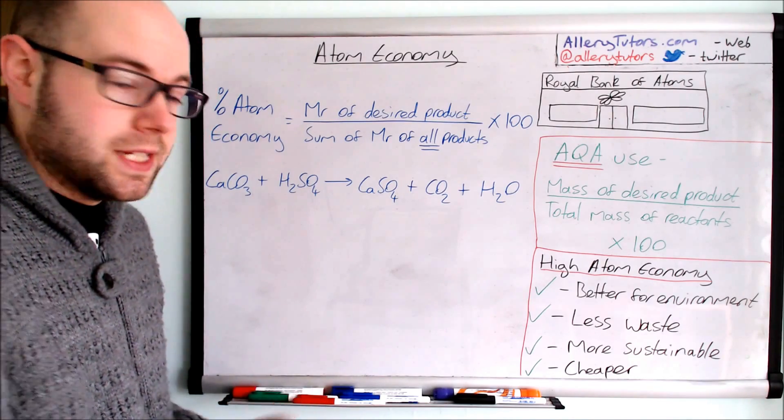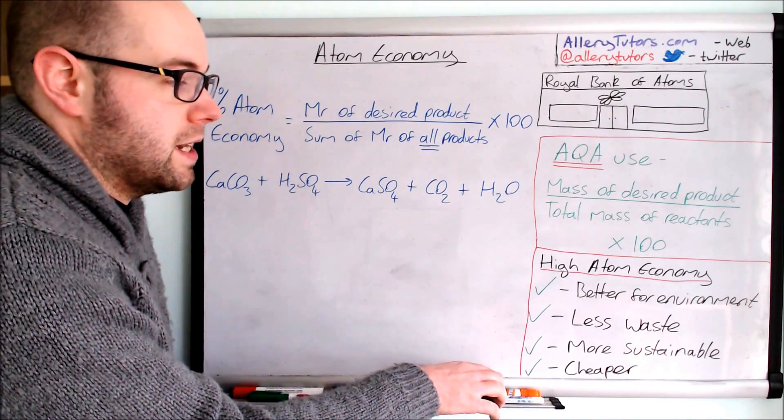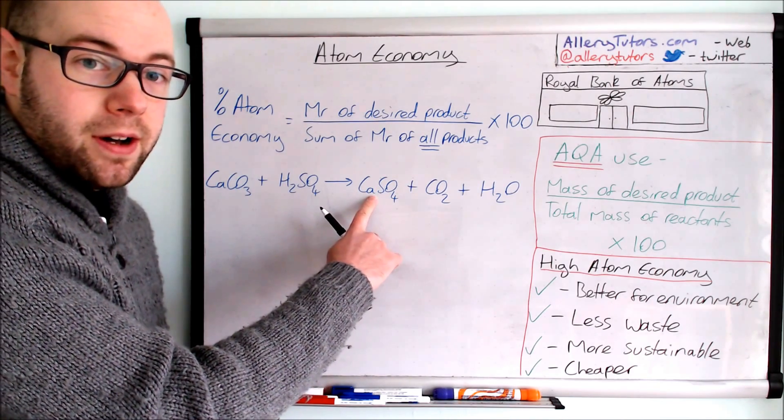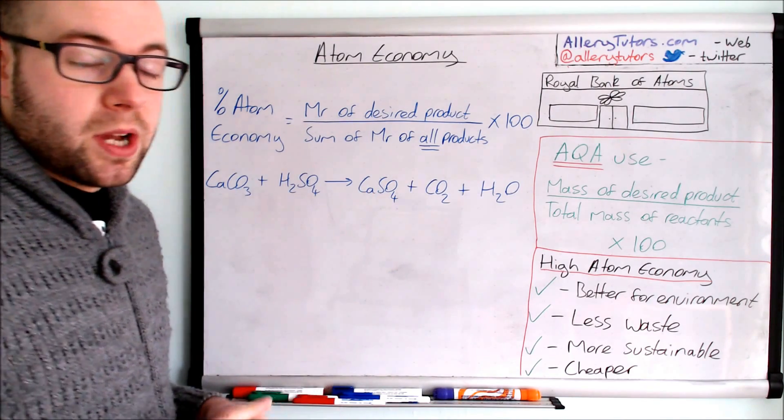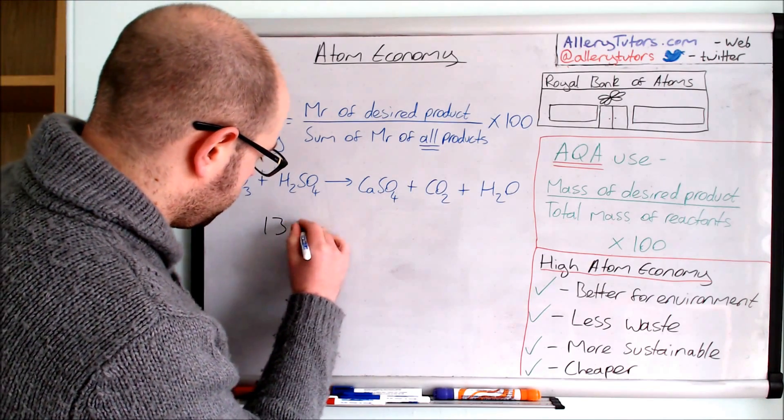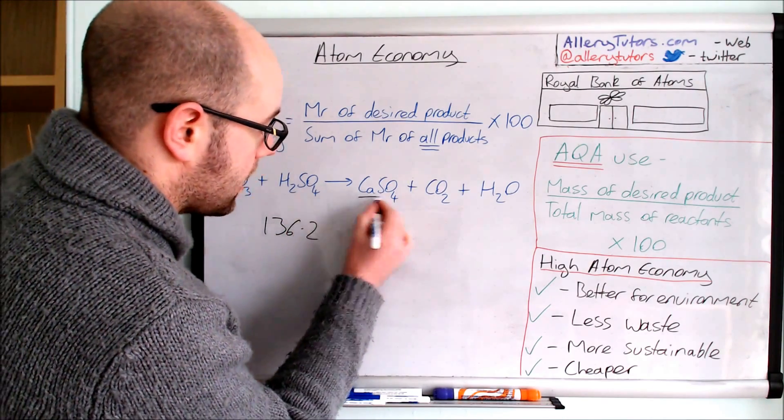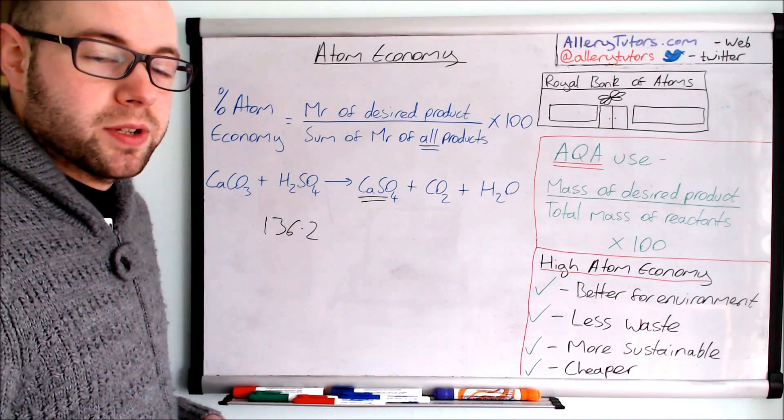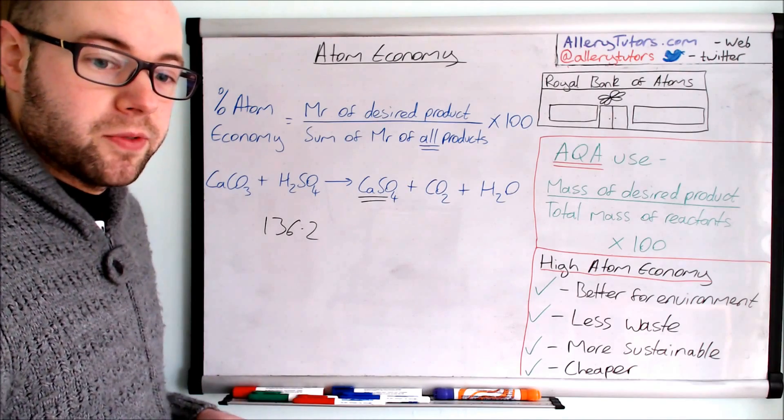So all we have to do is work out the total mass or the MR of calcium sulfate and this should be 136.2. So we're going to put that there. This is our desired product that's what we want to work out. Again in the exam they will tell you what the desired product will be or you would have worked it out beforehand.